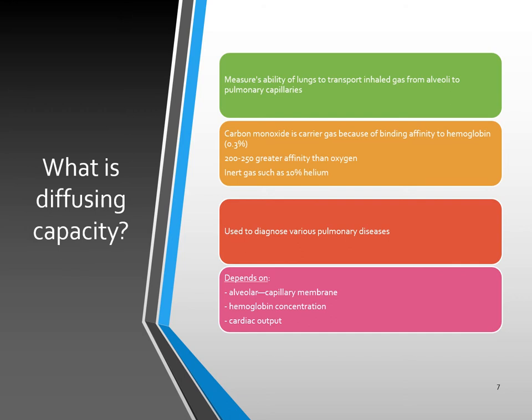When we breathe in air, it comes into our lungs and works its way into the alveola. From the alveola, it meets the alveolar capillary membrane, and then the gas diffuses from the alveola into the capillary bed, which has red blood cells. In the red blood cells, we have hemoglobin. Oxygen attaches to the hemoglobin and is transported to the rest of the body for use. That entire process — from breathing in air, into the alveola, transferring through the capillary membrane, into the red blood cell, and attaching to the hemoglobin — is the whole process of diffusion.